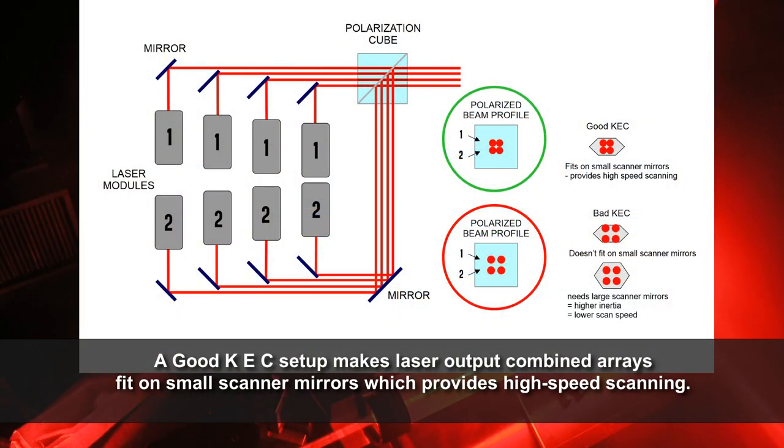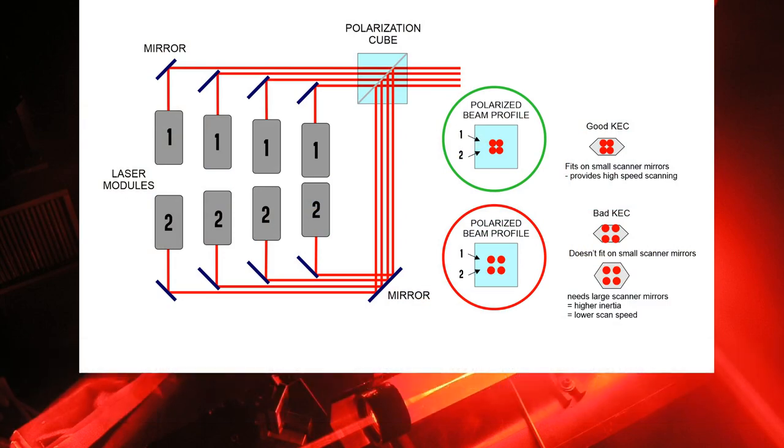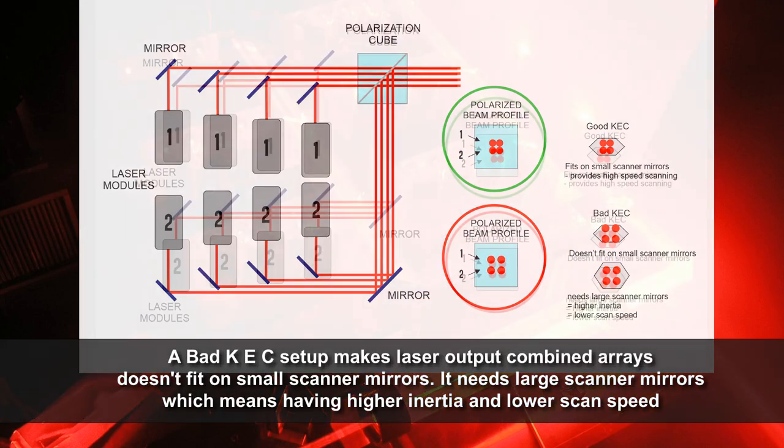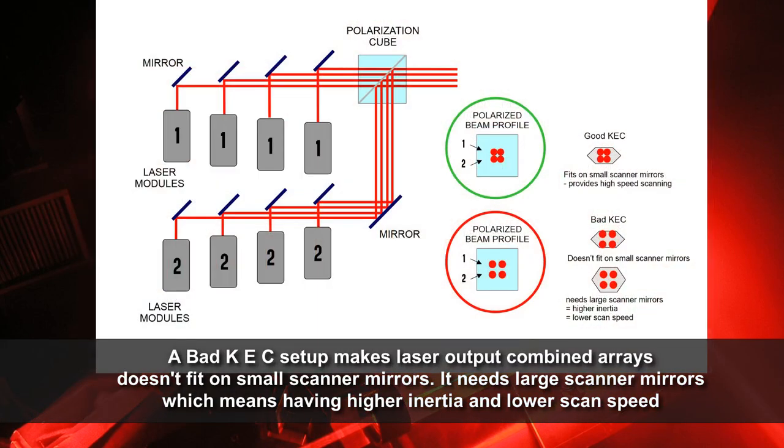A good KEC setup makes laser output combined arrays fit on small scanner mirrors, providing high-speed scanning. A bad KEC setup makes laser output combined arrays not fit on small scanner mirrors. It needs large scanner mirrors, which means higher inertia and lower scan speed.